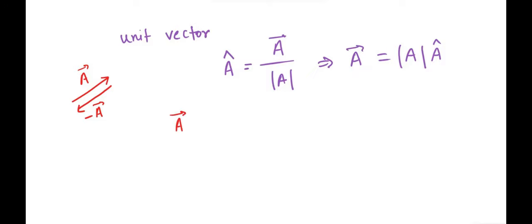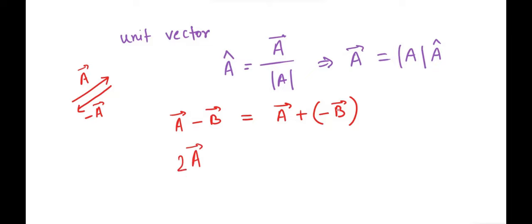If you want to subtract a minus b, it's simply the addition of two vectors where the second vector is the negative of b. Vector addition holds many laws — for example, addition is commutative, although subtraction is not. If you multiply a vector by a scalar number, you get a bigger vector; multiplying by two gives a vector twice the length.